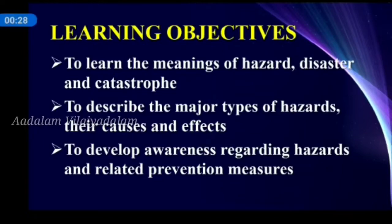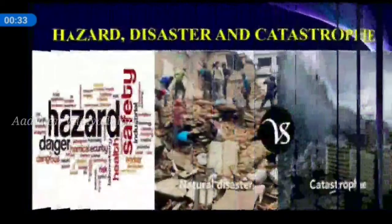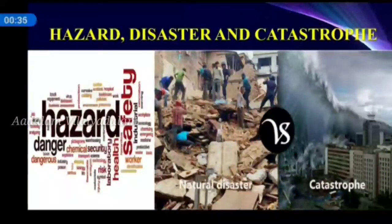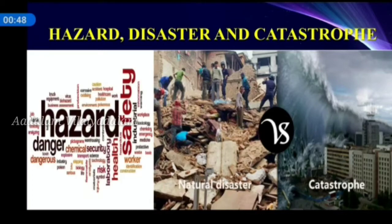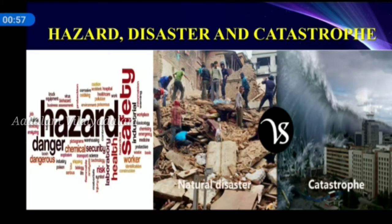Let us start with the first objective of this lesson, the meaning of Hazard, Disaster and Catastrophe. Children, tell me what are hazards? Hazards are defined as a thing, person, event or factor that possesses a threat to people, structures or economic assets which may cause a disaster. In simple terms, hazards means danger. Hazards could be either human-made or naturally occurring in the environment. The word hazard owes its origin to the Old French word meaning a game of dice.